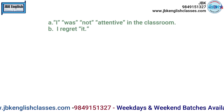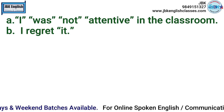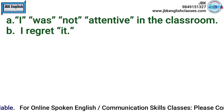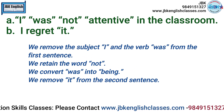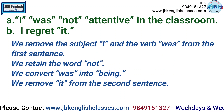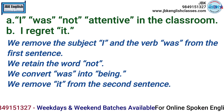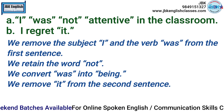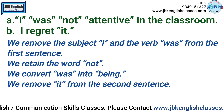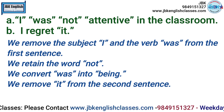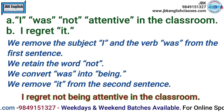So, there are two sentences. Number one: I was not attentive in the classroom. Number two: I regret it. We make the following changes to join the two sentences. We remove the subject 'I' and the verb 'was' from the first sentence. Second, we retain the word 'not'. We convert 'was' into 'being'. Then, we remove 'it' from the second sentence. After making these four changes, the combination of these two sentences is: I regret not being attentive in the classroom.